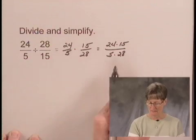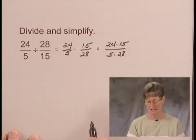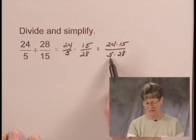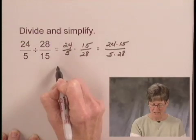I see that 24 and 28 each have a factor of 4, and I see that there's a factor of 5 in the denominator and 15 has a factor of 5.